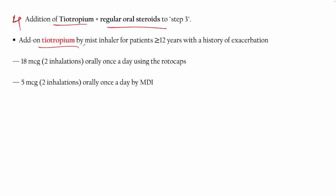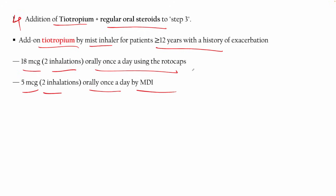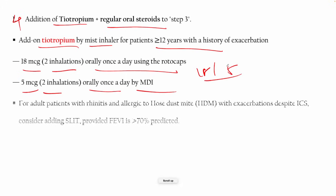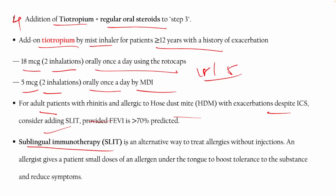Tiotropium is a mist inhaler for patients aged 12 and above. The dose is 18 mcg, 2 inhalations once daily via rotacap, or 5 mcg, 2 inhalations once daily by MDI. For adult patients with rhinitis or allergic conditions, ICS plus SLIT (sublingual immunotherapy) can be used.